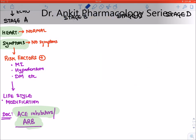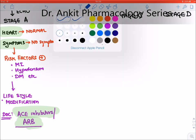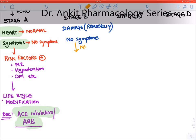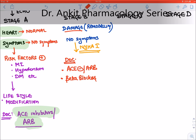In Stage B, the heart is damaged — there is cardiac remodeling — but there are still no symptoms. This is also classified as NYHA Stage 1. The treatment: we continue with ACE inhibitor or ARB, and we add beta-blockers. ACE inhibitors, ARBs, and beta-blockers inhibit cardiac remodeling, which is why they are used.